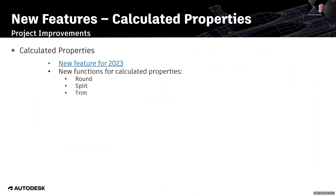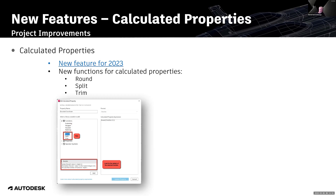Calculated properties — this was introduced in 2023, so last year. Now we have new functions for calculated properties around split and trim. I am creating here a new calculated property, and you can see these three new functions around split and trim. If I select one — in this case, round — I will get the details at the bottom giving you, for example, the syntax: round, then a bracket, then the property, and optionally the precision.